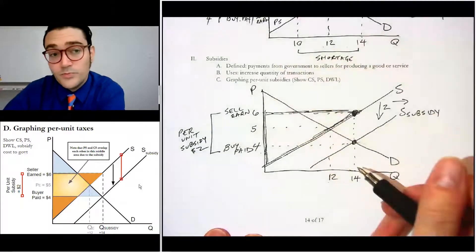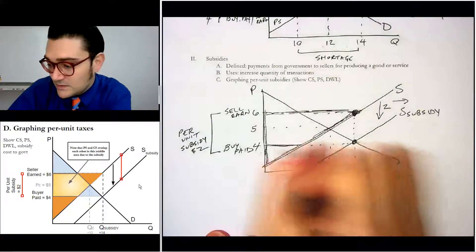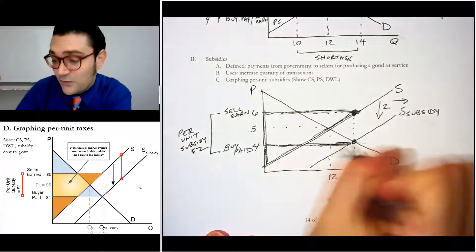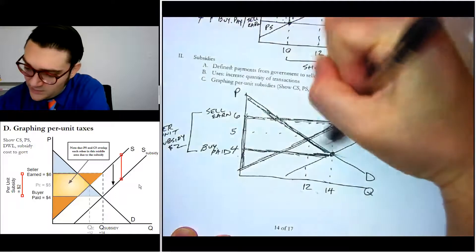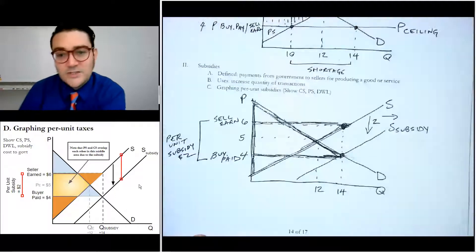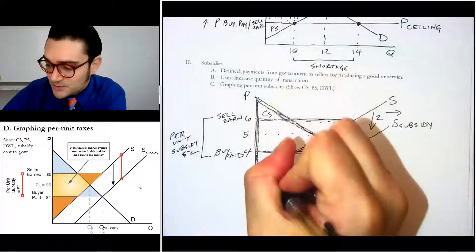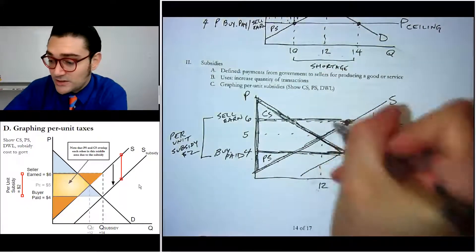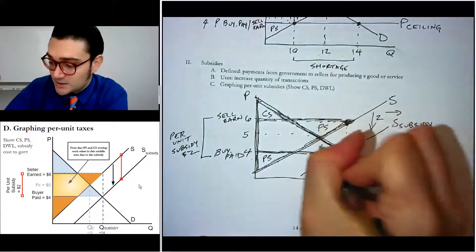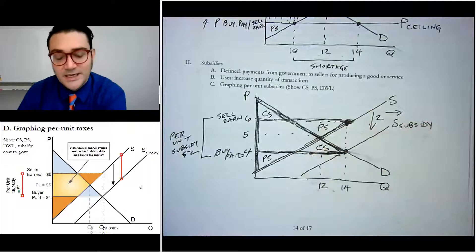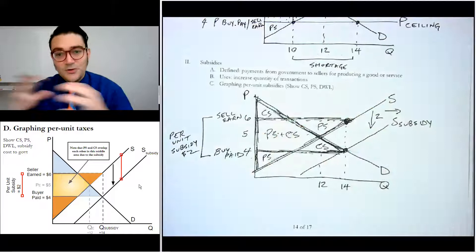Now the consumer surplus is from the price they paid up to the demand curve. So the price they paid was four up to the demand curve. Right? It's like that. Now there's an overlapping shape in the middle. So we know that's consumer surplus. That's producer surplus. This is also producer surplus. This is also consumer surplus. And this stuff is both producer surplus and consumer surplus. It's overlapping.